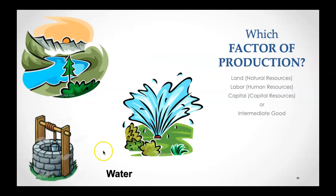Water is a tricky one — it depends on what kind. If we're talking about untreated water from an irrigation ditch or an untreated well, which factor of production would that be? But if it is the treated water we get out of our faucets at school or at home — water that has been processed to the point of being drinkable — which factor of production is that?